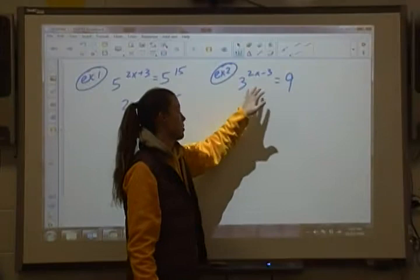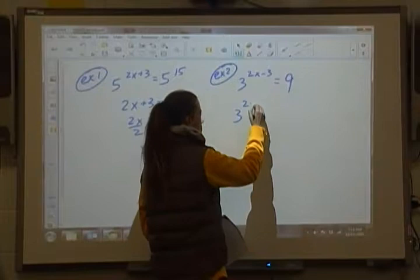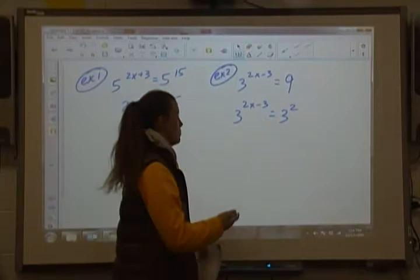This is not the one-to-one property because 3 and 9 aren't the same base. But we can change 9 into something that has a base of 3. So that can be 3 squared. Now we have the same base. Now we're able to do that.